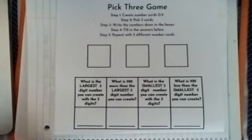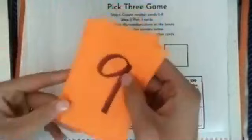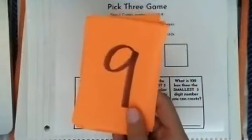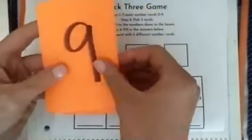So step one, you need to create number cards. These are made out of index cards. You can make them out of paper, index cards, or construction paper. All you need to do is cut them out so they're in little rectangles. You need to make number nine,